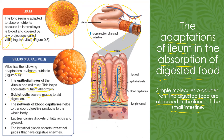Next, we are going to look at the network of blood capillaries. Inside the villus you can see the blue and red structures — there are many of them. These are the blood capillaries. The network of blood capillaries will help to transport the digestive products that have been absorbed to the cells and to the whole body.